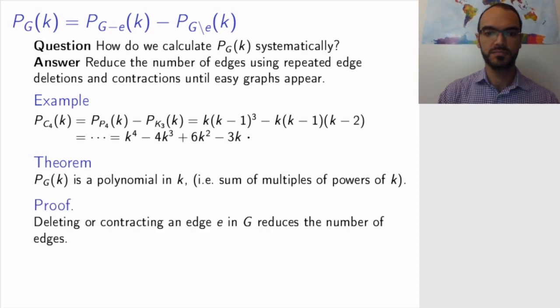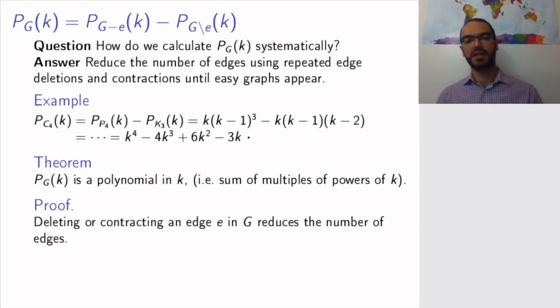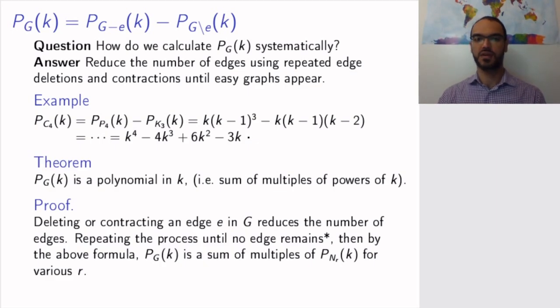Why is this the case in general? Well, by deleting and contracting an edge, you reduce the number of edges in the graph. So if you do this repeated times, this procedure that I showed you for C_4, if you, so we started the graph with 4 edges, and next step we had 3 edges, and we keep going until we hit 0 edges, because at each step we're reducing the number of edges.